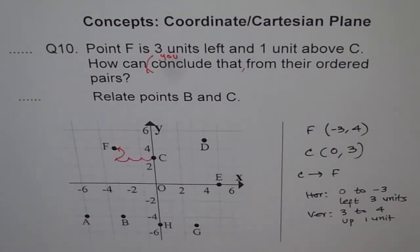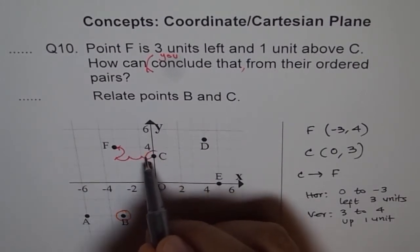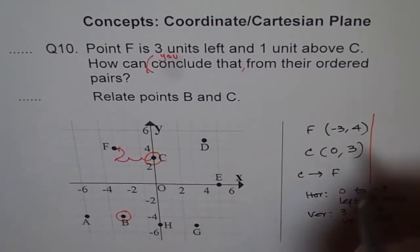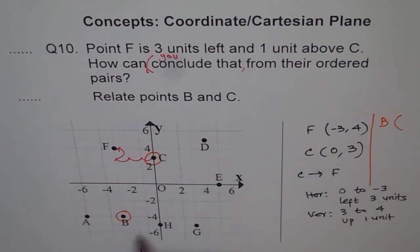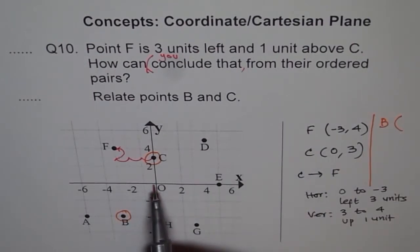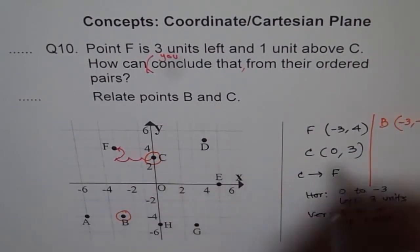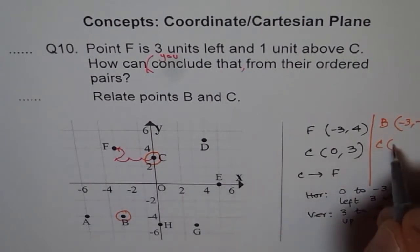B and C is here. B is here, right? So from B to C, we have to relate them. So what are the coordinates of point B? Write down coordinates for point B. So B is, X first, (-3, -4). How about C? C is (0, 3).